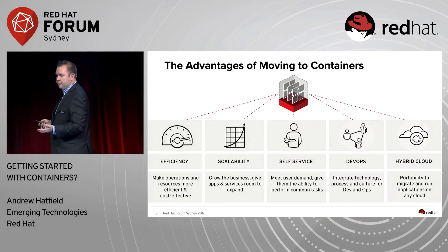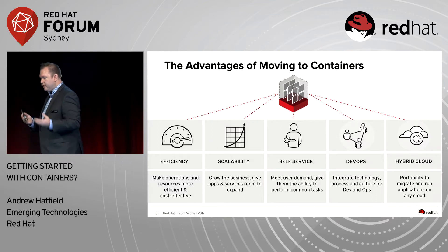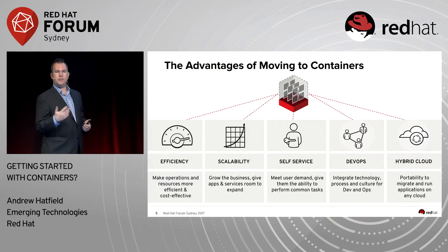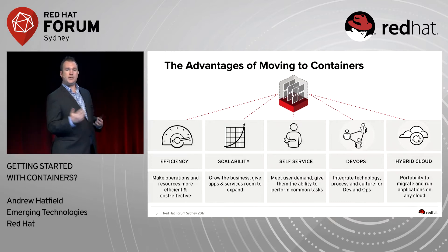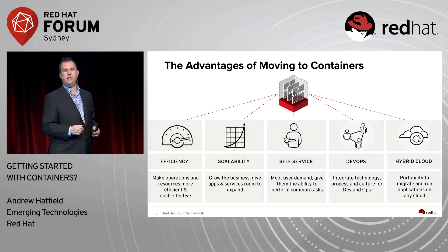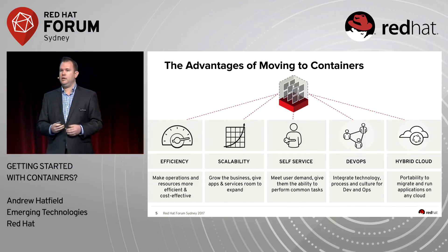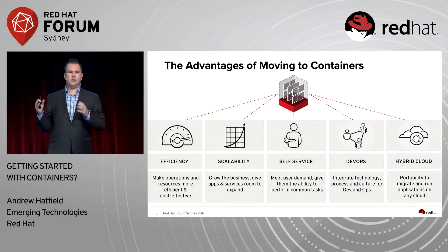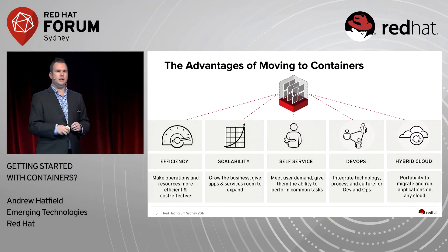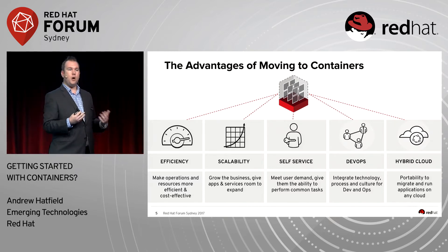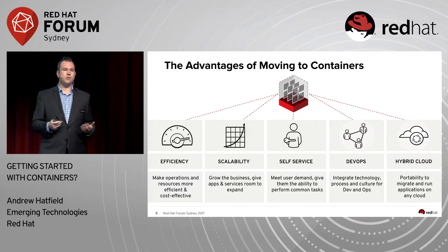From a hybrid cloud perspective, Red Hat has this idea of an open hybrid cloud — open not just in terms of open standards but open source, and hybrid meaning not just geographic diversity but technology diversity as well. So don't put all your eggs in one basket by just using one public cloud vendor. Use a number of them for both technical and commercial reasons.